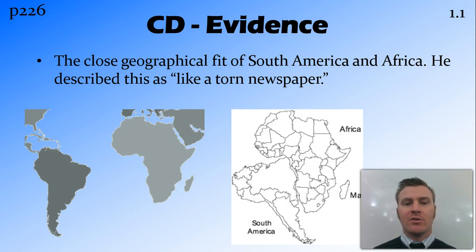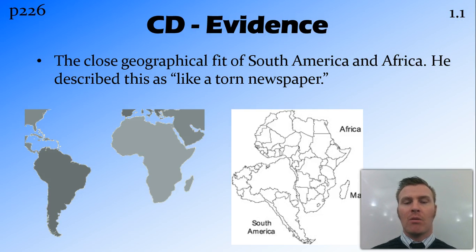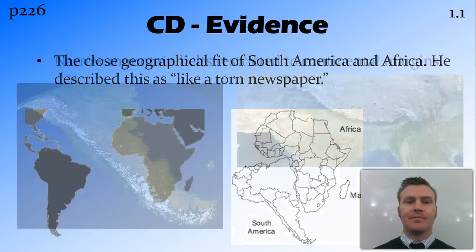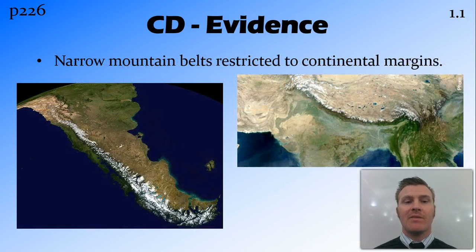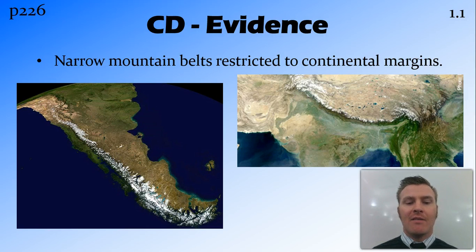He referred to this close fit as like torn newspaper — as if they were one piece in the past and had been torn apart. Another piece of evidence was the narrow mountain belts that were restricted to the continental margins, right on the edge of the continents.